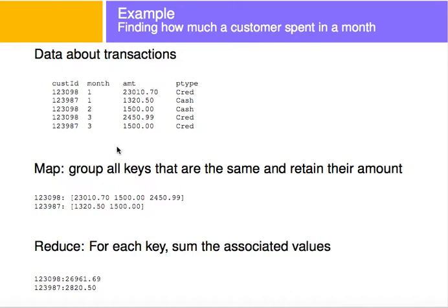So again we had this input and we created an output which is a key value pair. The customer ID is going to be the key and then for every one of these keys I'm going to be accumulating the amount. I forget about the month, I forget about the payment type. The file output is a key value pair.